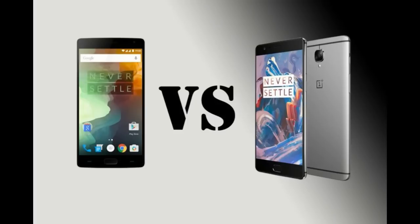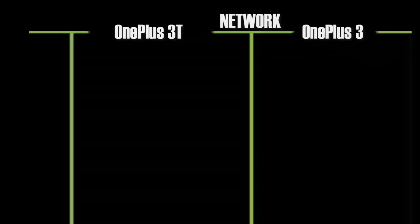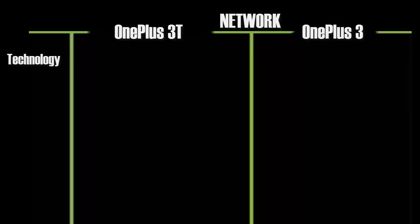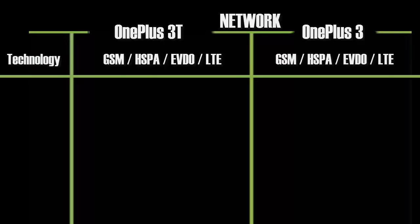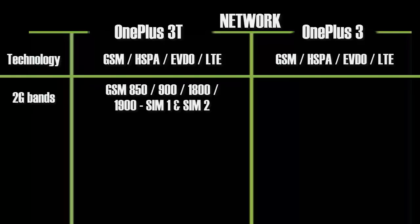In this video I'm going to compare the OnePlus 3 and OnePlus 3T mobile phones. These two phones are similar to each other but there are many differences. Moving to the network section, both of these devices support 2G, 3G, and 4G bands, and both devices now support 4G VoLTE, so you can make calls directly with your 4G SIM card.